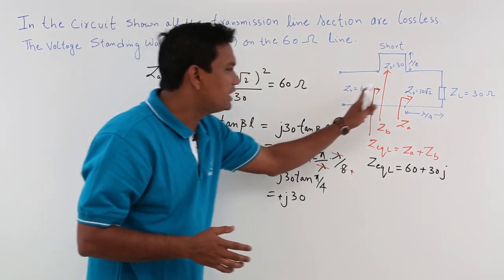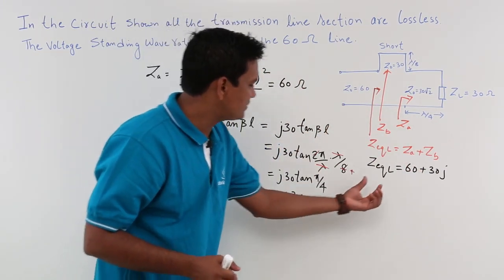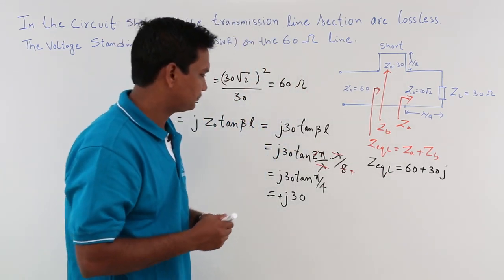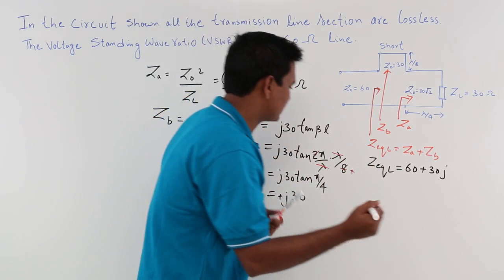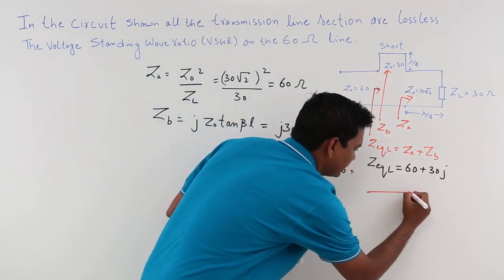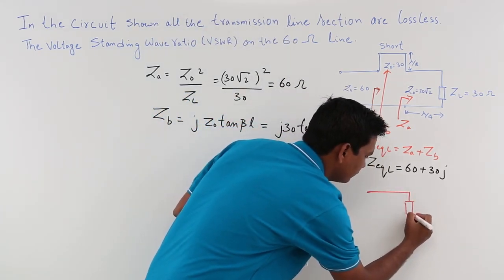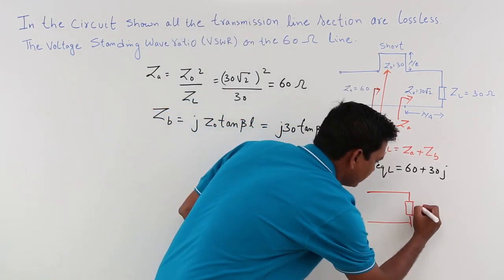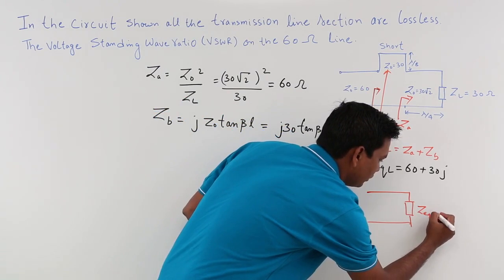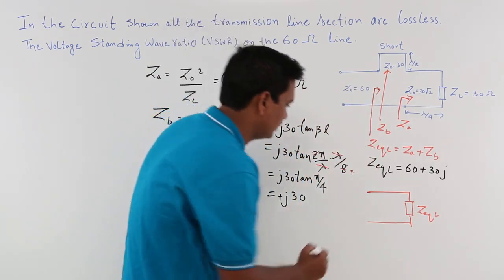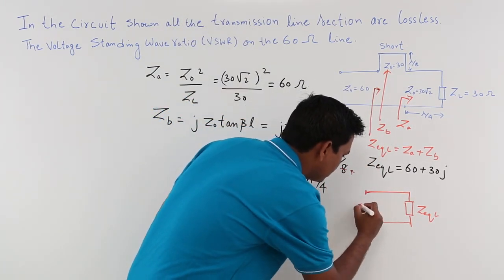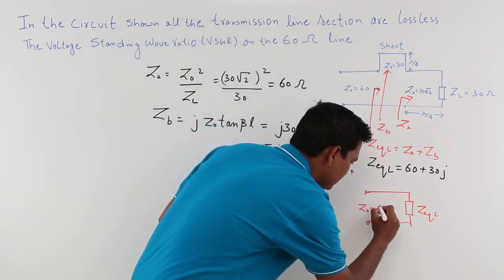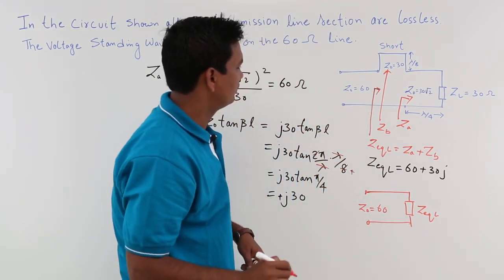Let me redraw this circuit. Once I have Z equivalent load, the circuit looks like a new single load equal to Z equivalent load, which is 60 plus j30, and the characteristic impedance Z naught is 60 ohms.